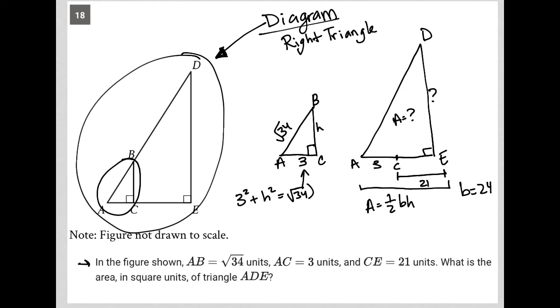When I do the math there, I have nine plus H squared equals 34. I subtract nine from both sides and I'm left with H squared equals 25. And of course, I square root both sides and I'm left with H equals five. So my height here is five.